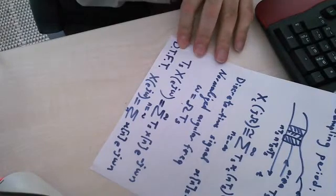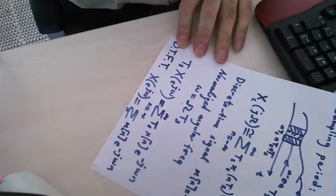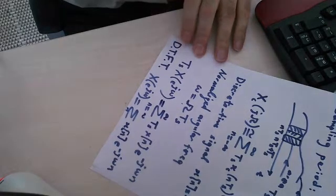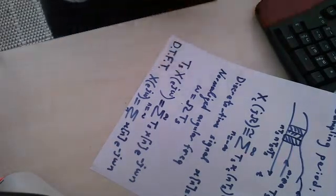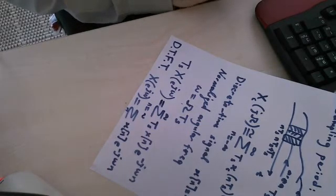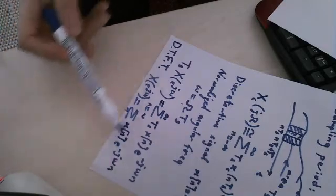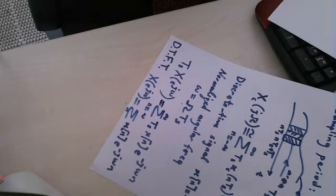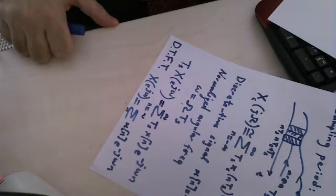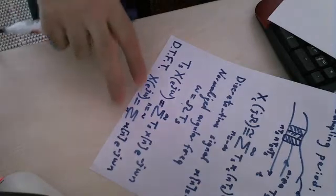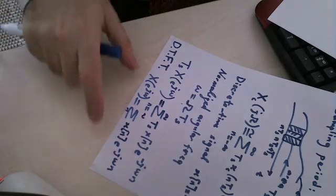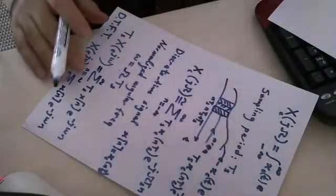The other one is continuous time Fourier transform. This is what we obtain for an arbitrary signal. Of course, this DTFT converges to xc of j omega when we let Ts go to 0. Otherwise, we have this approximate relation between discrete time Fourier transform and continuous time Fourier transform.